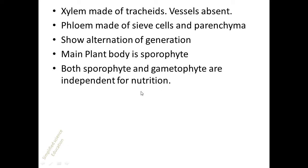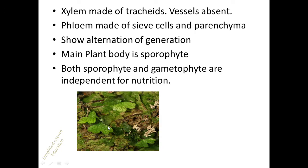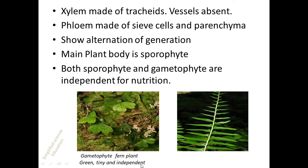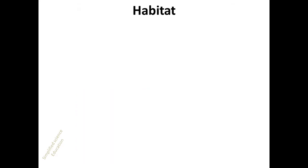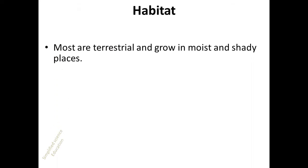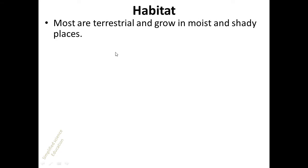In pteridophytes, the main plant body is the sporophyte, and both sporophyte and gametophyte are independent for their nutrition. In the picture, you can see the gametophyte of a fern plant, which is green and tiny and independent, and this is the sporophyte of the fern plant.